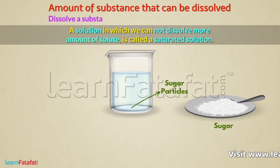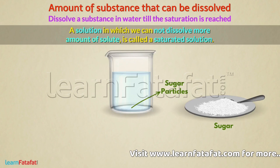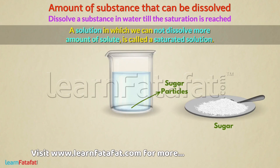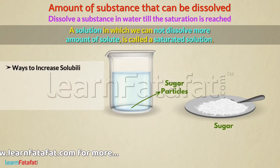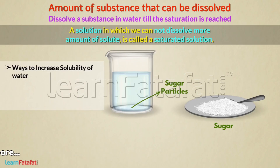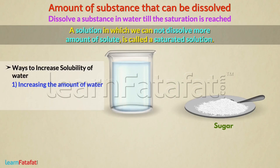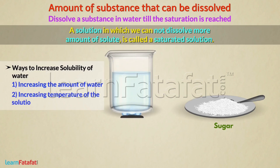We can dissolve a substance in water until saturation is reached. This gives the answer to our first question. There are ways to increase the solubility of water. One way is by increasing the amount of water. But what if we don't have more water? In such a case, we increase the temperature of the solution.